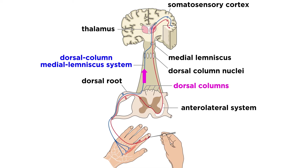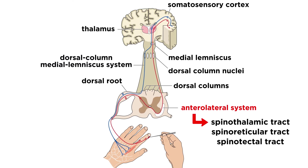For the dorsal column medial lemniscus system, neurons ascend in dorsal columns and enter the brain at the dorsal column nuclei. They then cross over to the other side of the brain, ascend in the medial lemniscus towards the ventral posterior nucleus of the thalamus, and then typically project to the primary somatosensory cortex. The anterolateral system is comprised of the spinothalamic tract, the spinoreticular tract, and the spinotectal tract, which go up the spinal cord all the way to the thalamus, where information is then distributed to the somatosensory cortex.